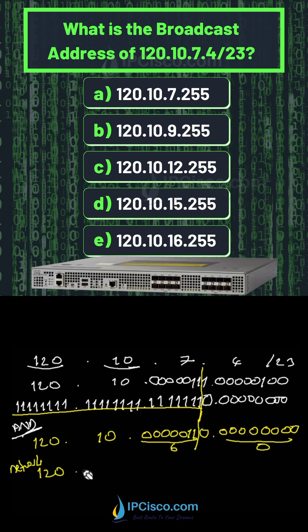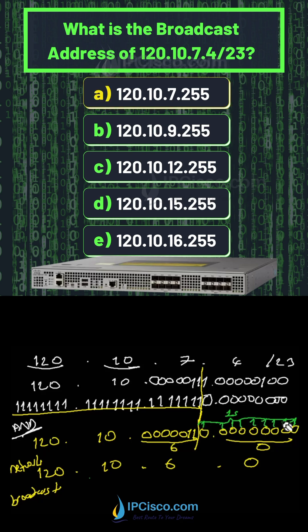As you can see here, all the host bits are zero. When we change these zeros to ones, we will find the broadcast address of this IP address.